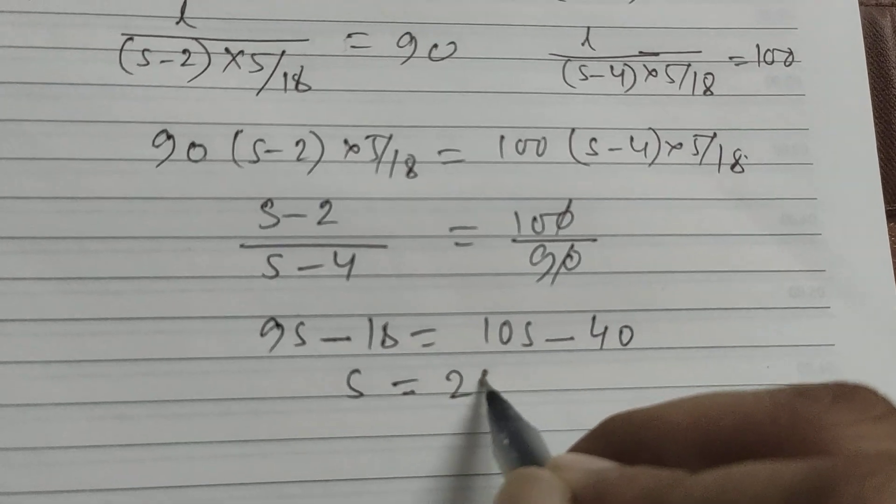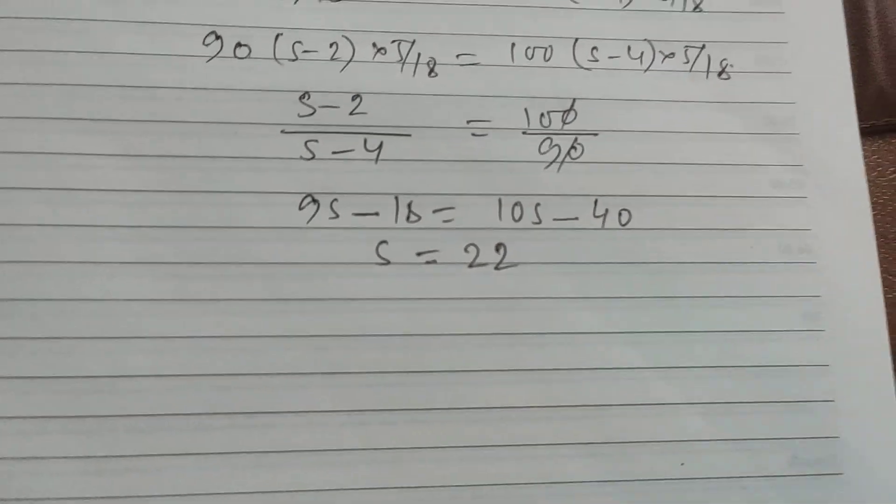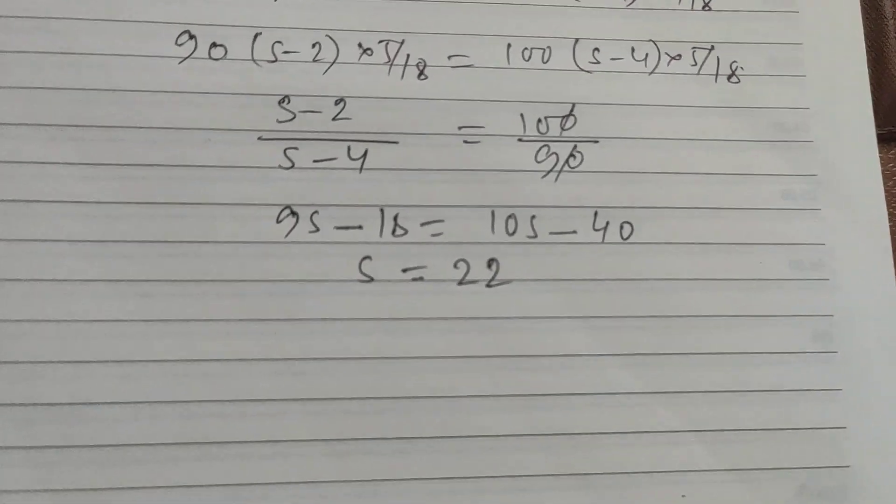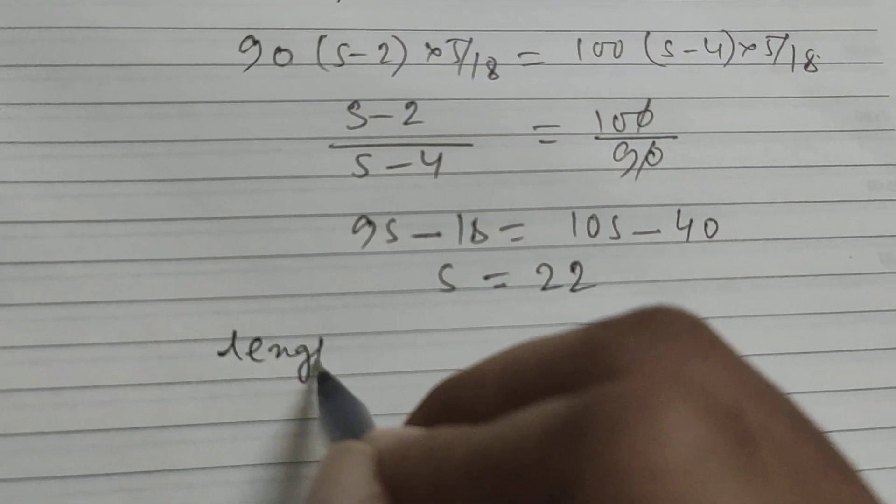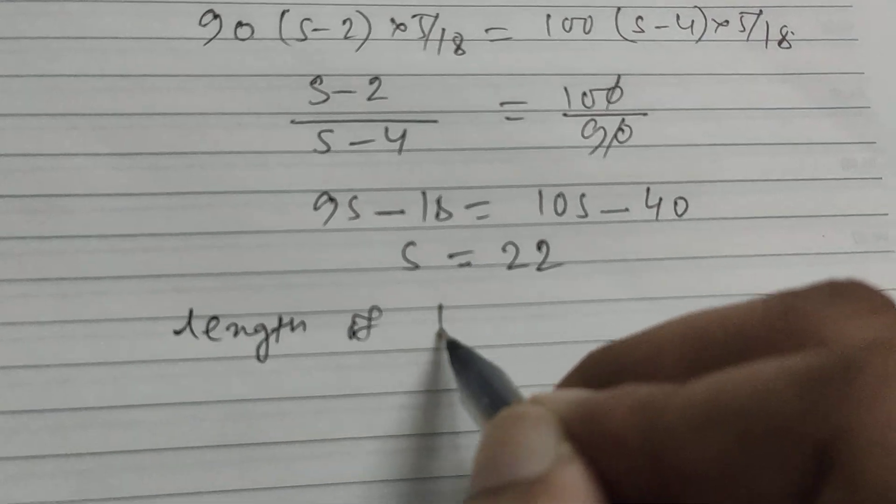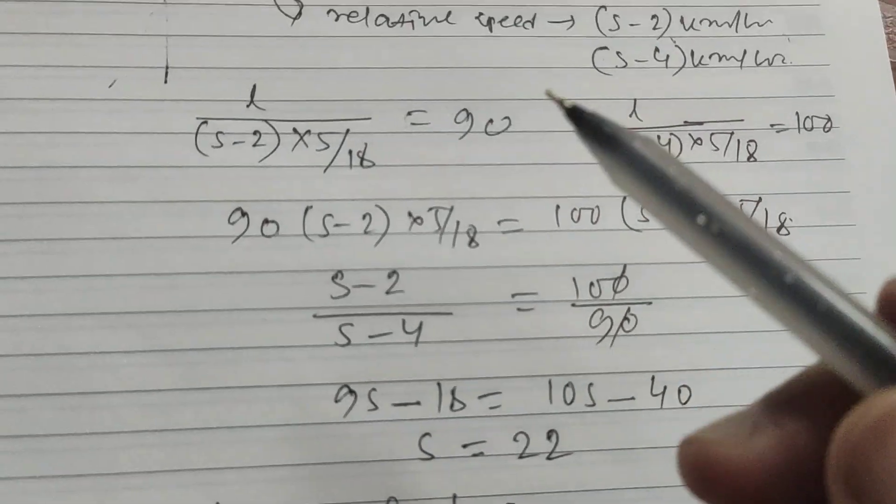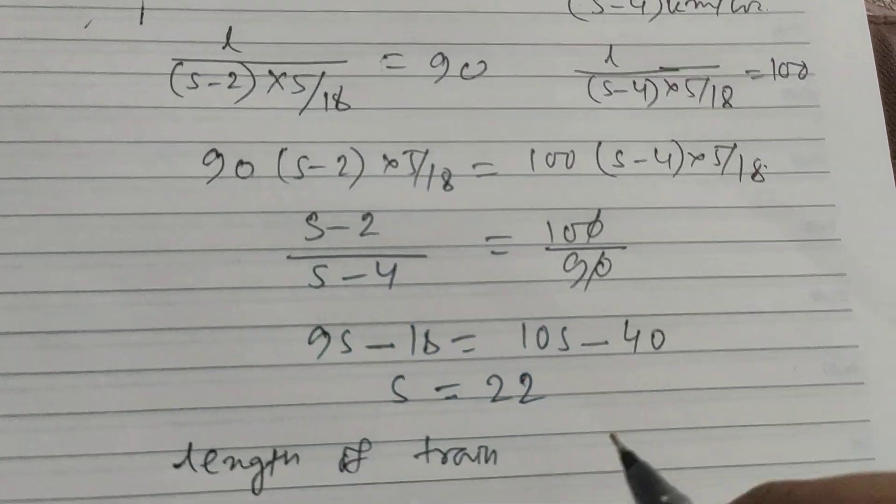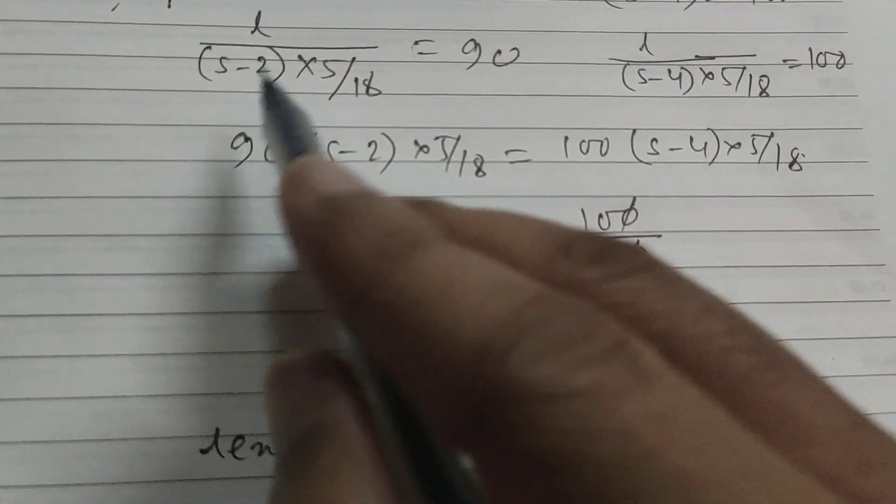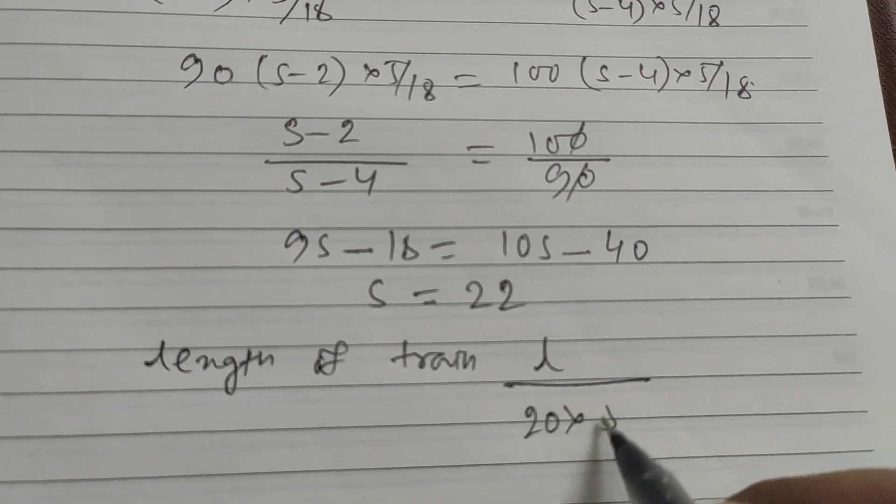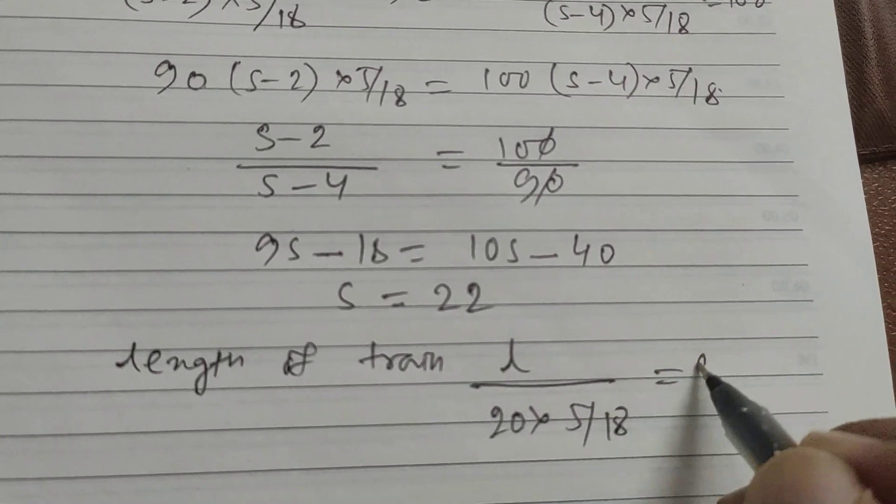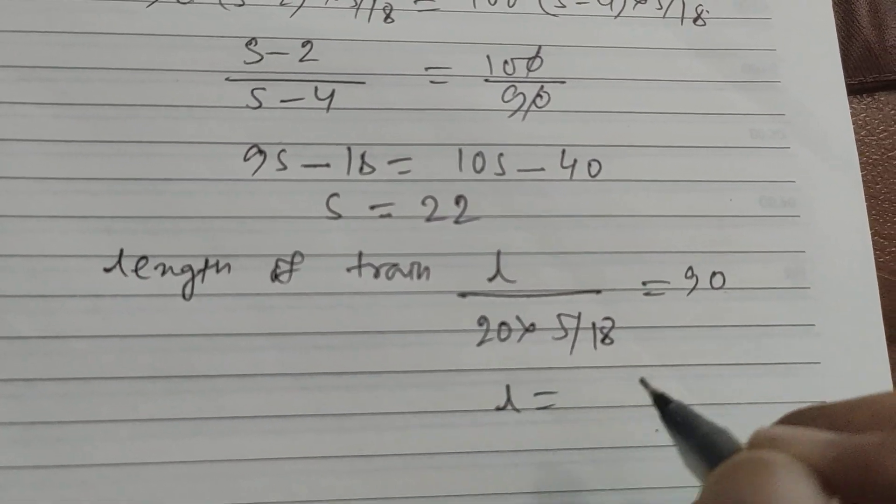Length of train - if you put here l divided by s minus 2, that's 22 minus 2, which is 20, into 5 by 18 equals 90. So l equals 90 into 20 into 5 by 18.